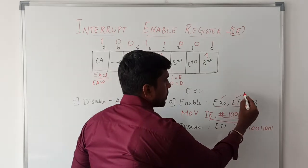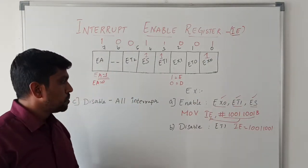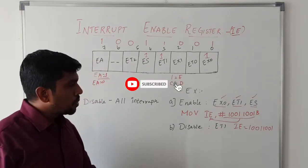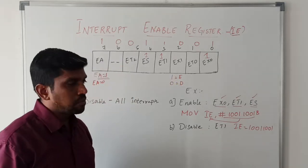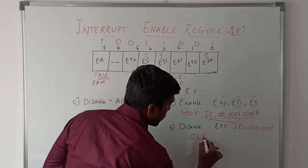Next we go to the second example: disable ET1. In this example only, we are disabling the timer 1 interrupt. You can write the instruction CLR IE dot, just you mention the bit.